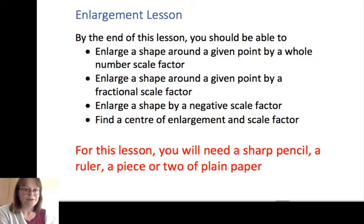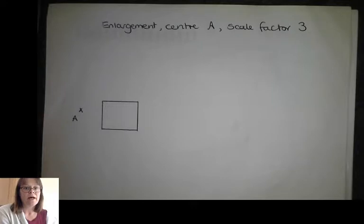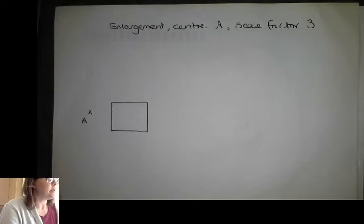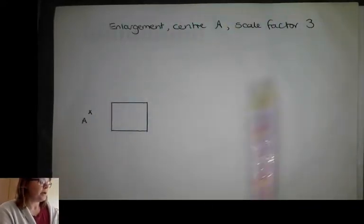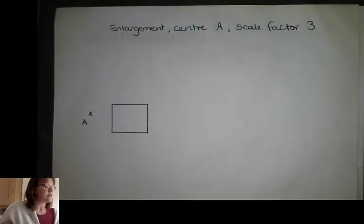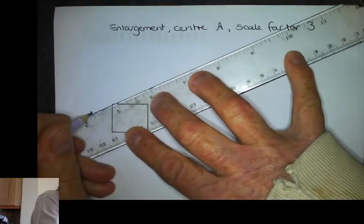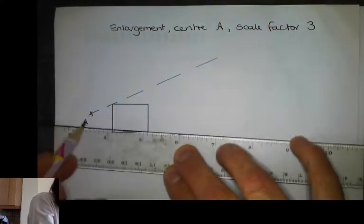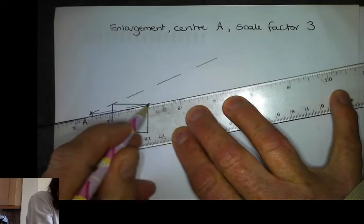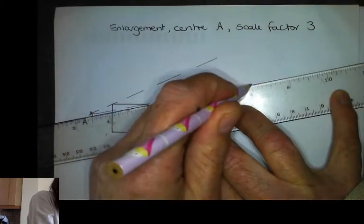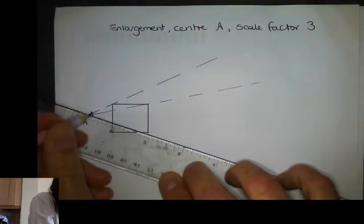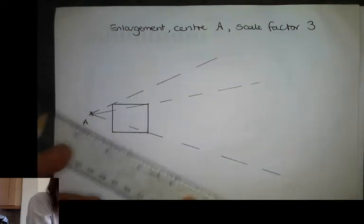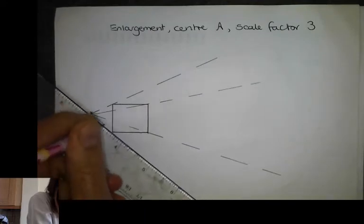The technology is really new so bear with me while I try and make everything work. So the first thing we're going to learn to do is to enlarge a shape about this point here — we're going to enlarge the shape, centre A, and we're going to use a scale factor of three. So firstly I need to put some dotted lines from this dot here through to every corner. You need to do this really accurately — you need to hit the corners. If you miss the corners then any mistake you make will get about three times bigger because we're using a scale factor of three.